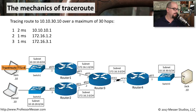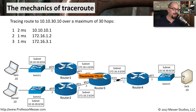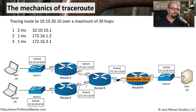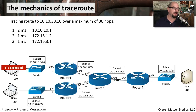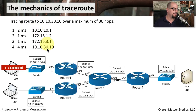Finally, with a TTL of 4, the packet makes it through all three routers. When it gets to Jack's machine, the TTL decreases one last time to 0 and Jack's device sends back a TTL exceeded message, completing the traceroute. Now we have a complete map of all the IP addresses it takes to get between Sam's device and Jack's device.